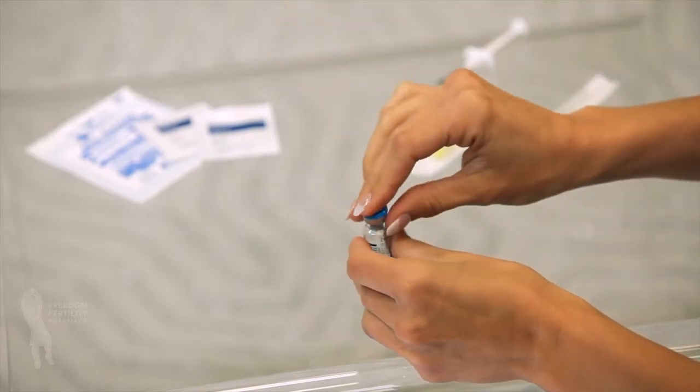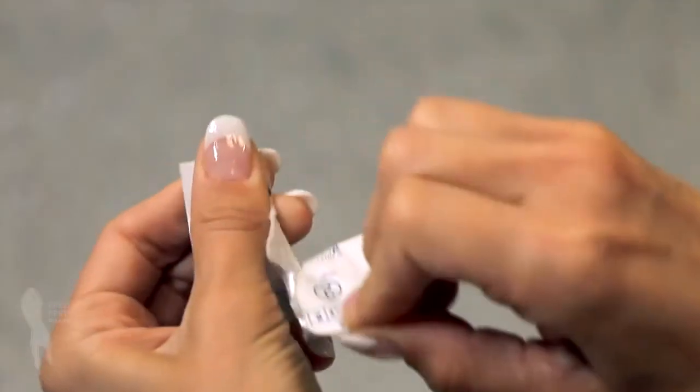Flip off plastic cap of the Cetrotide 0.25 milligram vial and wipe vial top with an alcohol swab.